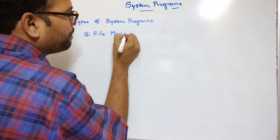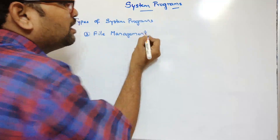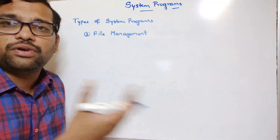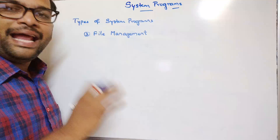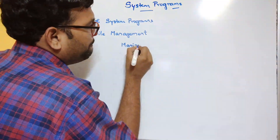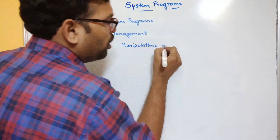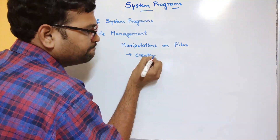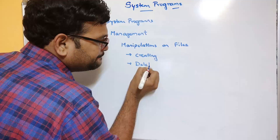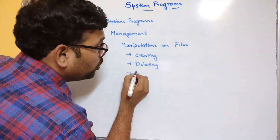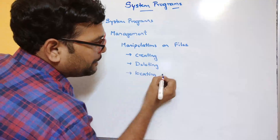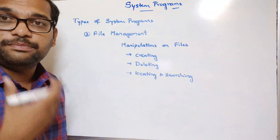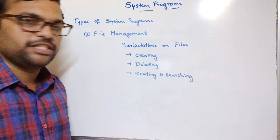The third type is file management. Whatever data we provide is stored in terms of files, and multiple files are stored in directories. The complete manipulation of files is done here — creating a file, deleting a file, locating and searching. Everything is handled by file management software.